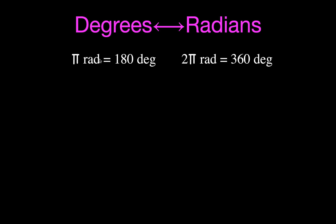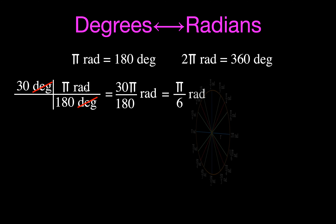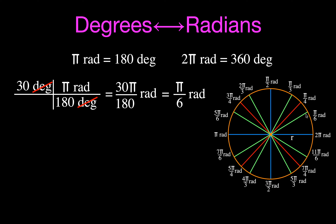To convert 30 degrees to radians, write down 30 degrees and set up the conversion fraction — I call these 'railroad tracks.' Put pi radians and 180 degrees in the fraction. Since degrees need to cancel, degrees go on the bottom, and pi radians go on the top. Then cancel degrees and multiply across: 30 times pi over 180 reduces to pi over six, because there are six 30s in 180. And pi over six is exactly 30 degrees on the unit circle.